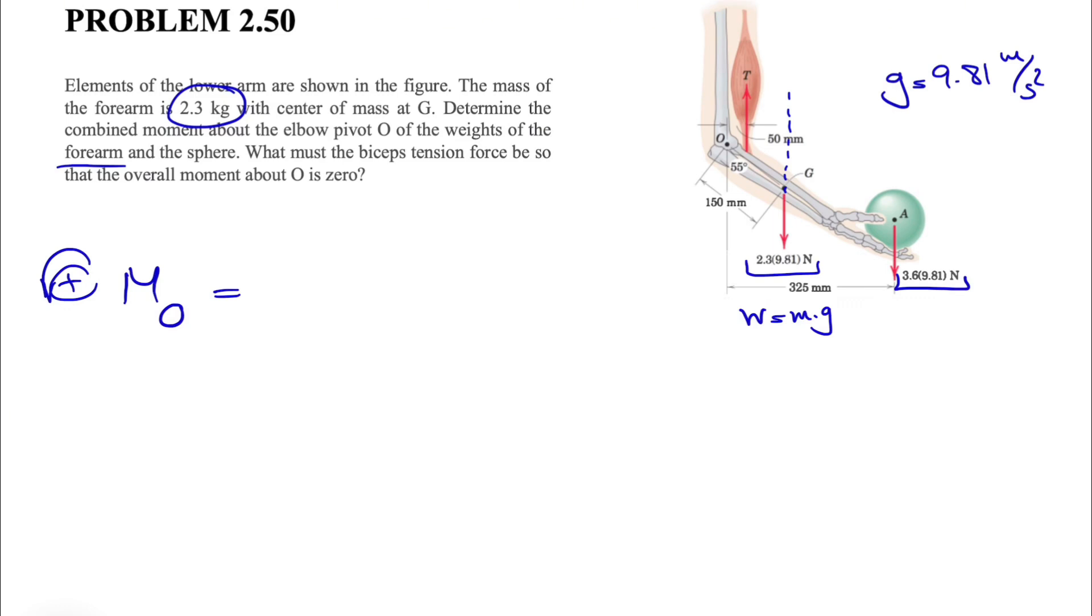Looking at the forearm, we see that the moment about point O is in this direction, which is clockwise, so we have a negative sign. The force is 2.3 times 9.81, that's the weight. The distance that we're interested in is the vertical distance to the line of action. We know this angle is 55 degrees, and the hypotenuse is 150 millimeters, divided by 1000 to get it in meters, times sine of 55.